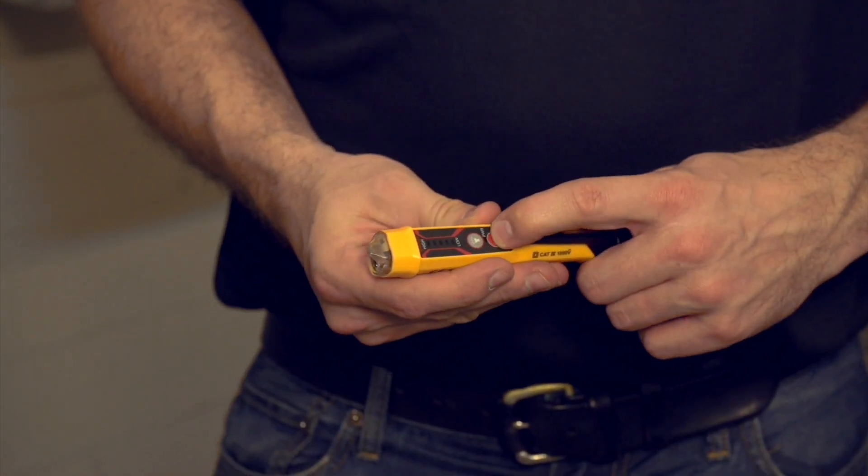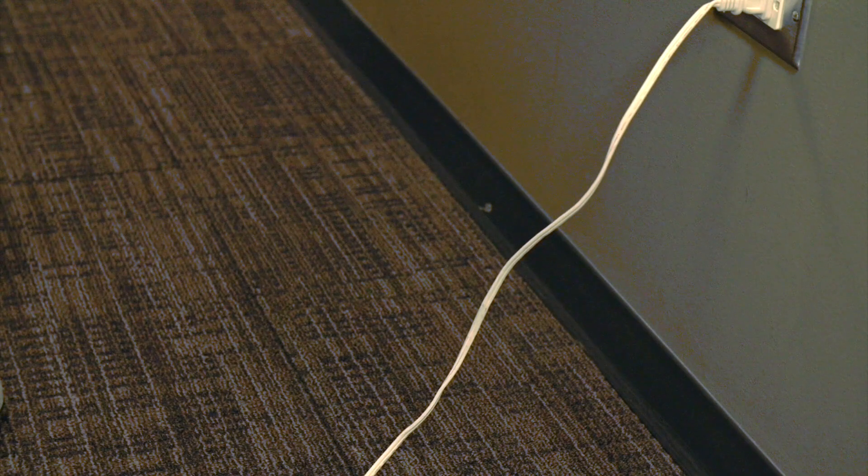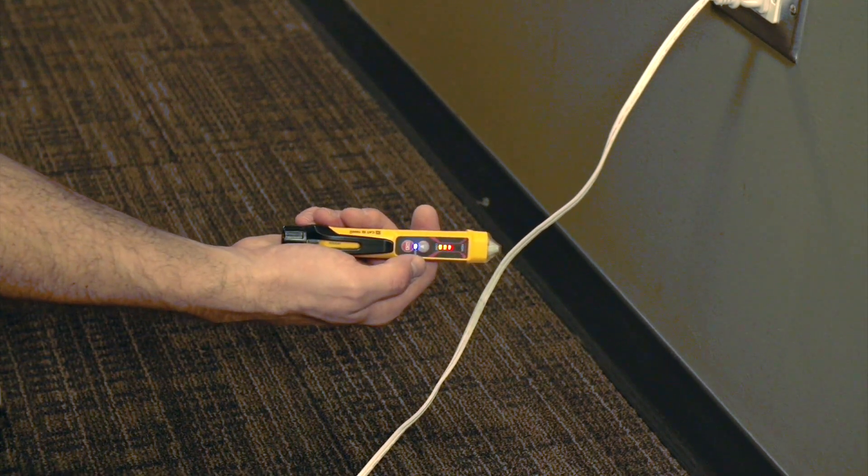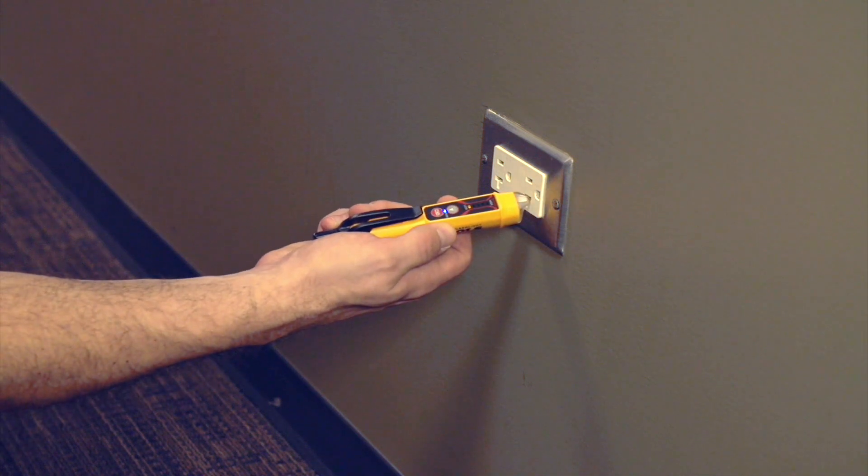Best practice in testing with non-contact voltage testers consists of three steps. First, test a known live system such as a cord of a lit lamp or an electrical receptacle or outlet to verify the tester is functioning correctly.